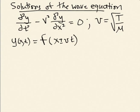Any function I like — for example, the exponential of x plus or minus vt — would be a solution. A complex exponential of x plus or minus vt, which would be a sine wave, is also a solution. As long as x and t only appear together in the combination x plus or minus vt, the function is a solution. I'll write this argument in shorthand and call it squiggle, equal to x plus or minus vt.